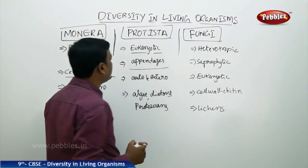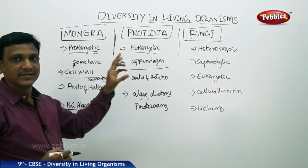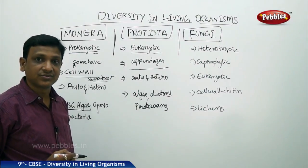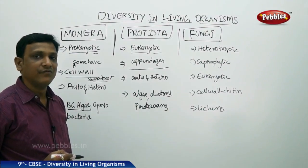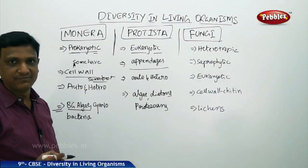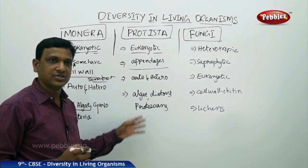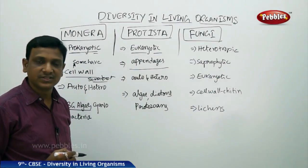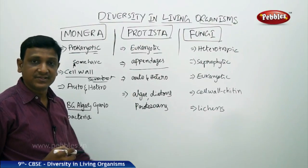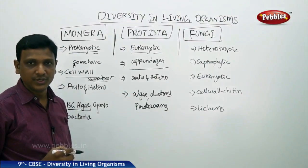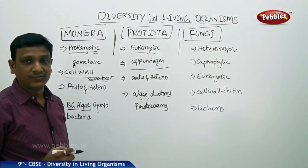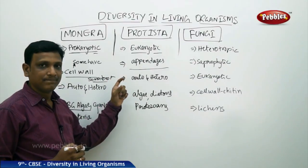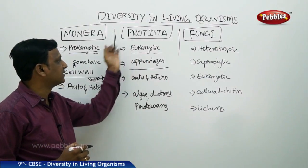An important feature observed in Protista is that certain organisms have appendages — special structures on their body surface which help them perform specific functions. For example, Paramecium and Chlamydomonas have cilia or whip-like structures. These cilia help the organisms obtain food, protect themselves, and move. Such special arrangements called appendages are present in Protista.